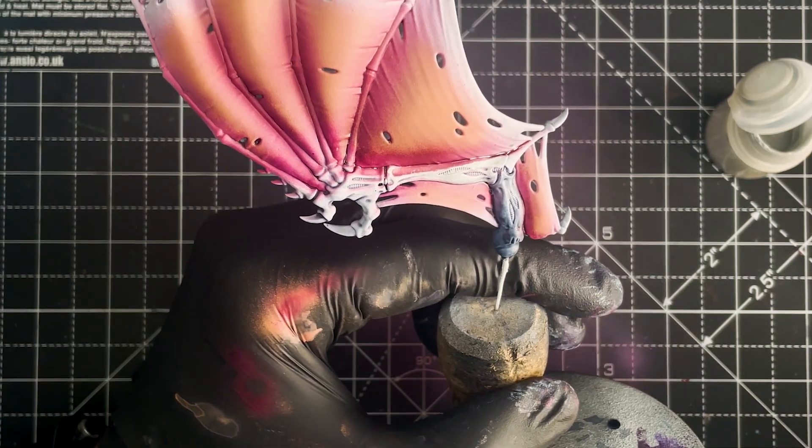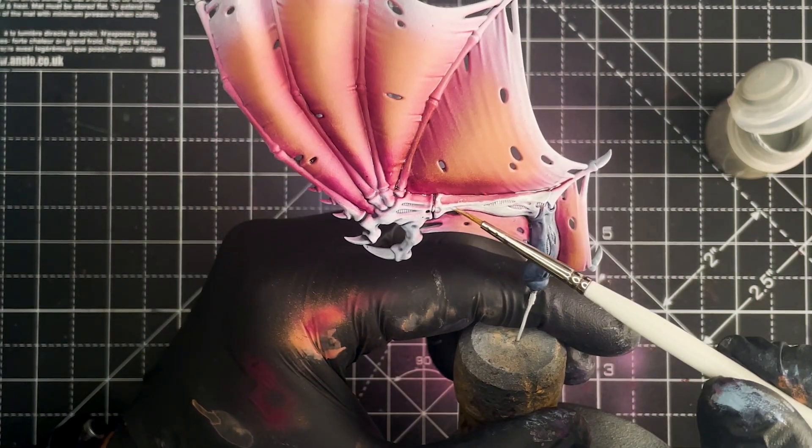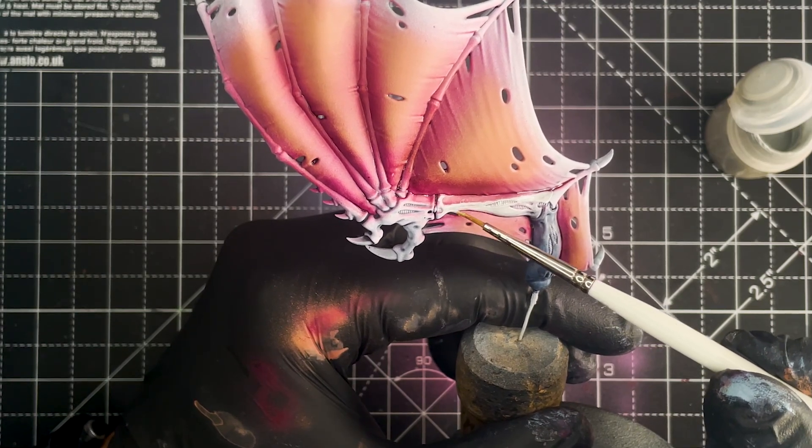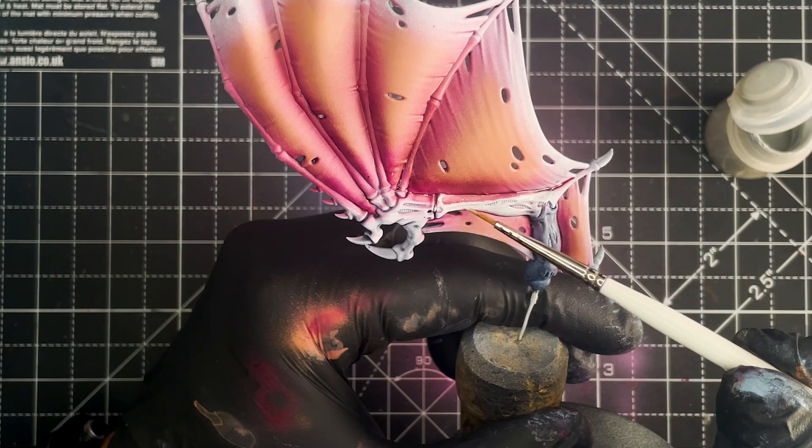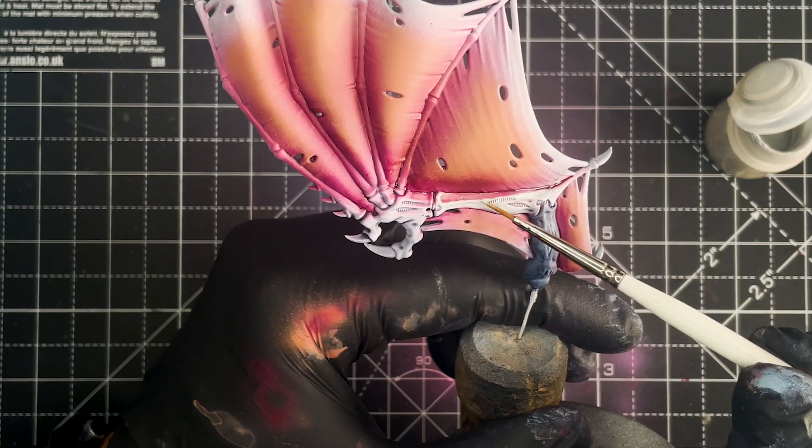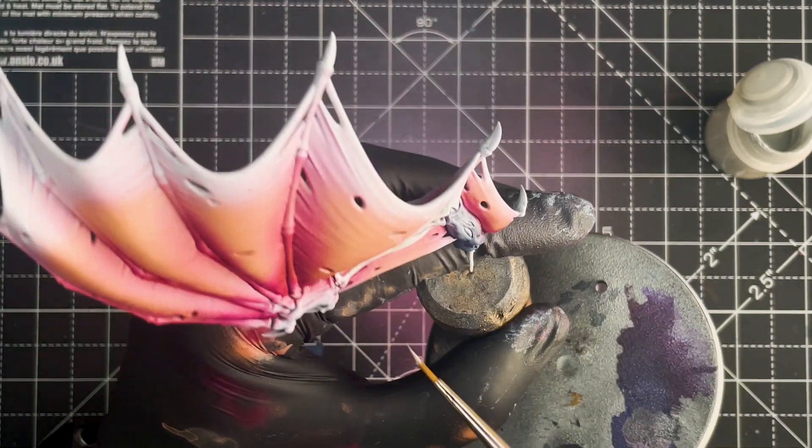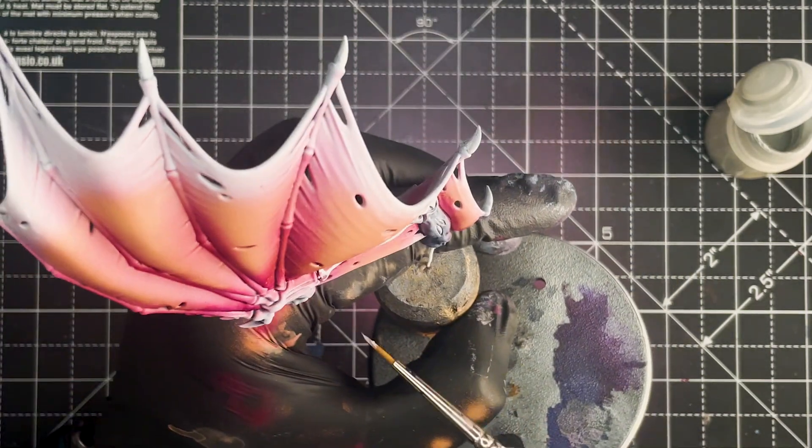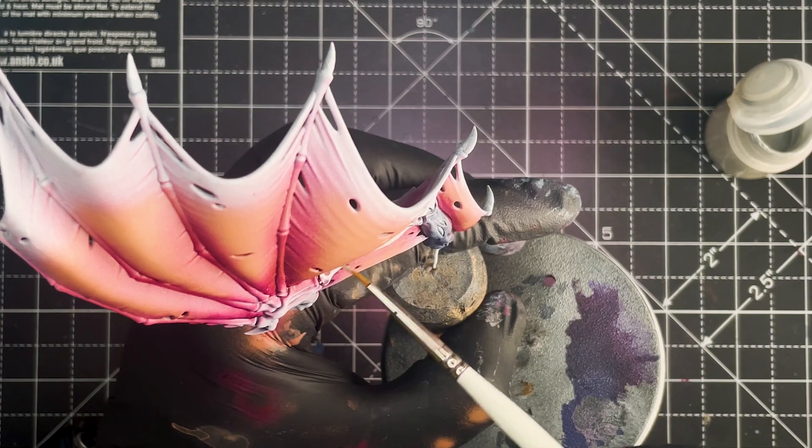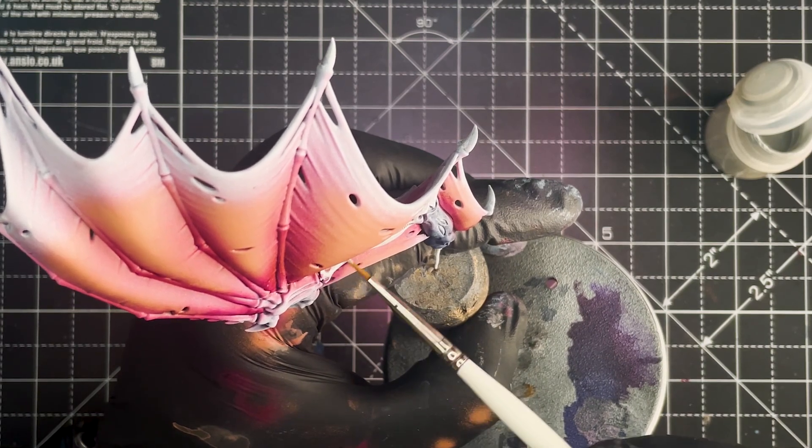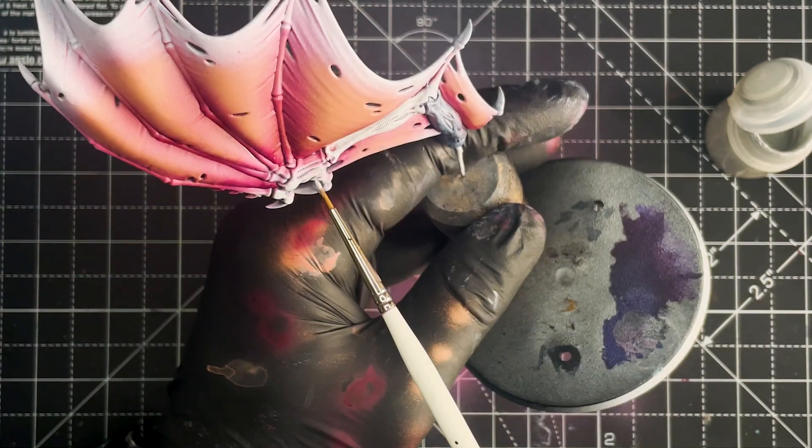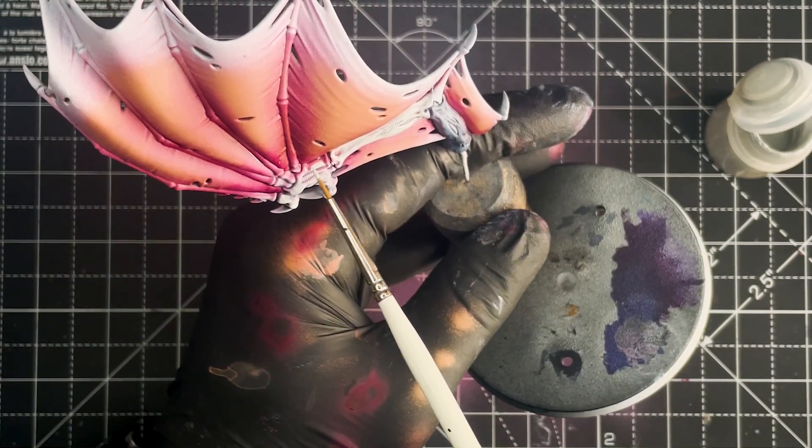And once that's done all that's left to do is to paint any of the horns and claws that are on the wings as well. And to do that I would just use the same technique of giving it a base coat of Citadel Contrast Volupus Pink and then highlighting it up with Army Painter Pixie Pink. And that's the wings complete and the model is now ready to be assembled and based.